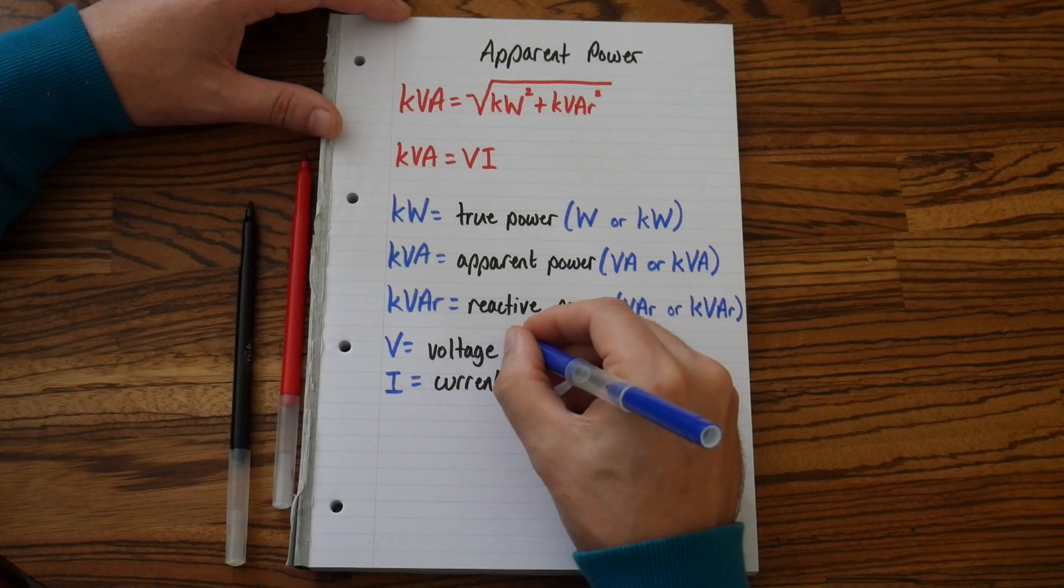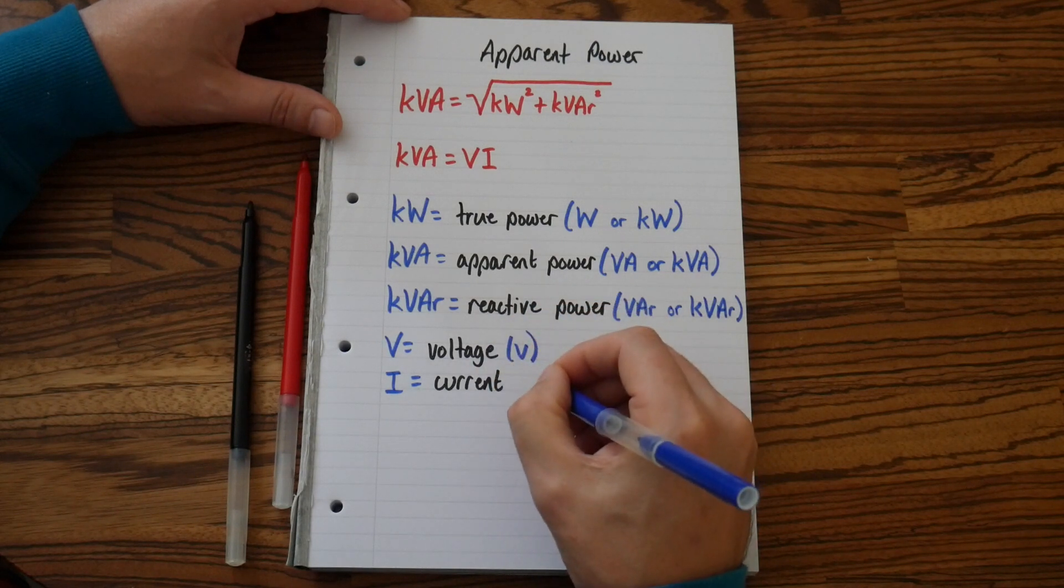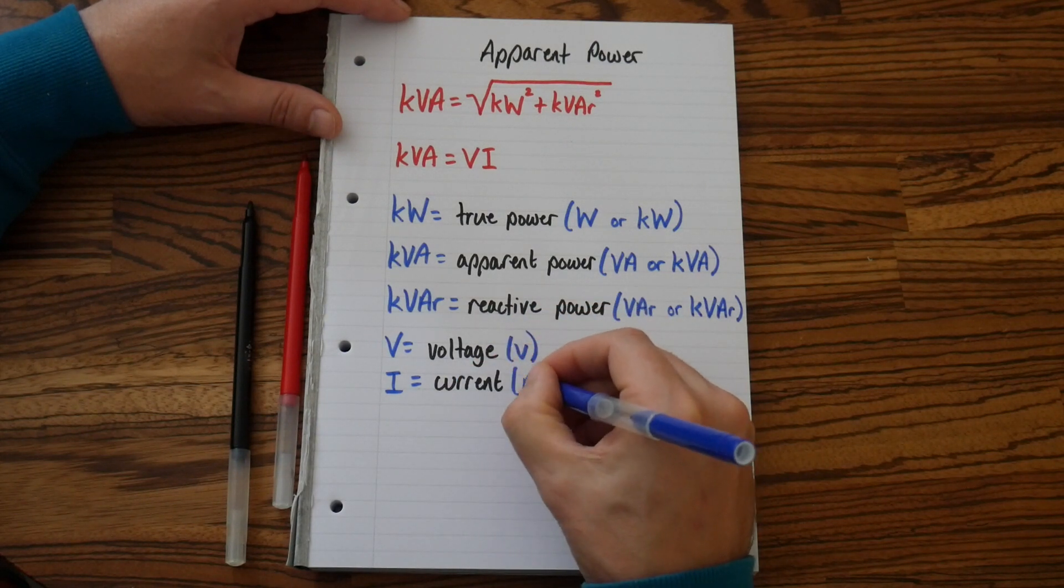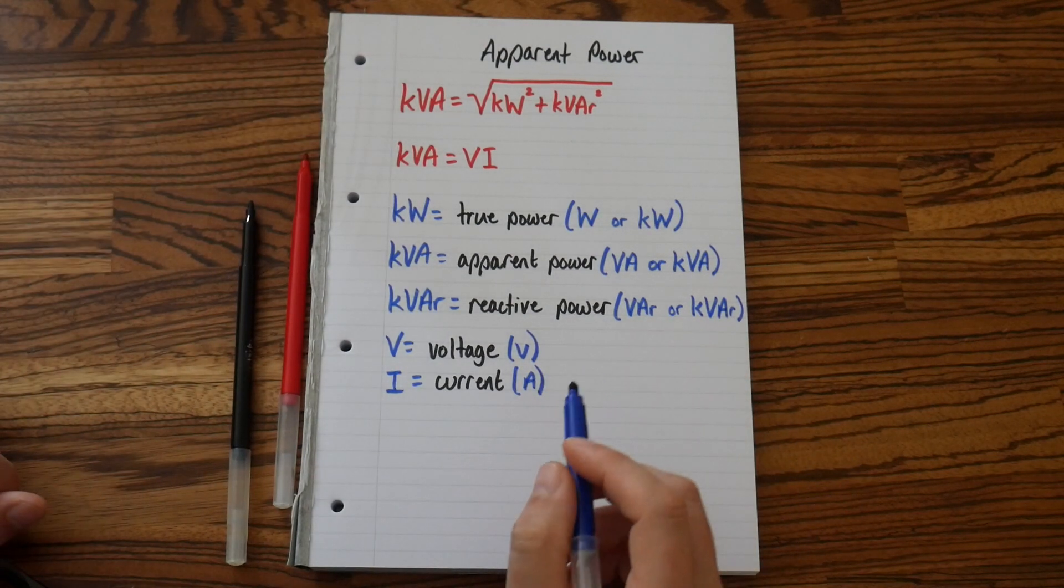And voltage, SI unit is volts. Current, SI unit is amps.